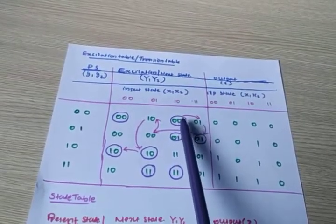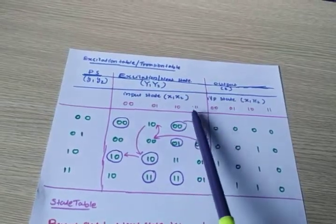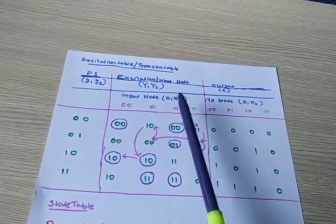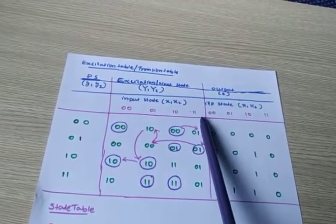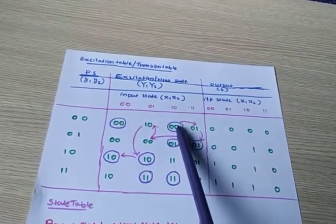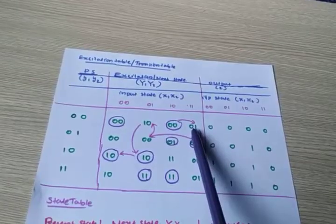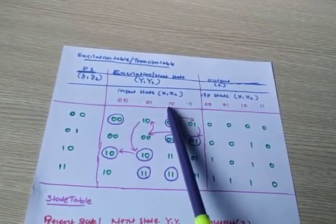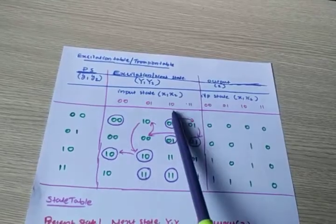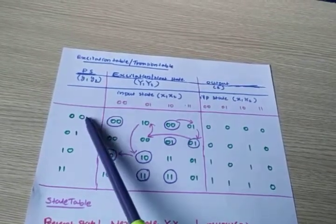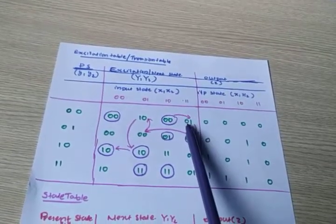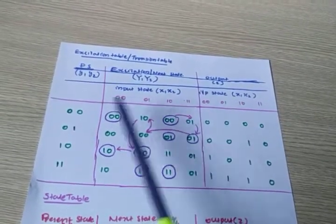In this stable state, suppose I am changing the input value to 1,1. The input is currently 0,0. Now I am changing the input value to 1,1. What happens is 0,0 is changing to 0,1. So 0,1 is the input, and the present state is not changing. But the next state is changing to 0,1, and these two are not equal.